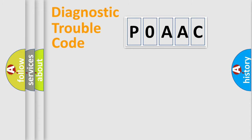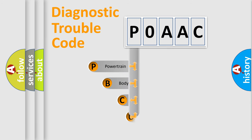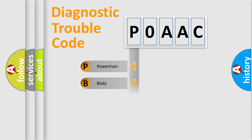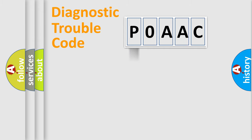Let's do this. First, let's look at the history of diagnostic fault code composition according to the OBD-II protocol, which is unified for all automakers since 2000. We divide the electric system of automobile into four basic units: Powertrain, Body, Chassis, and Network.